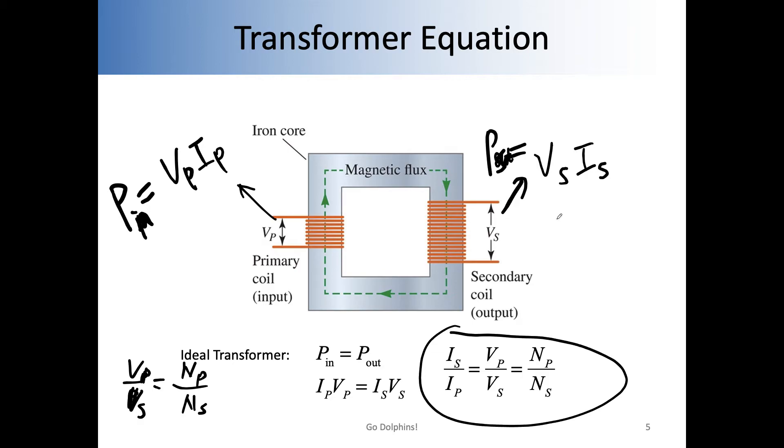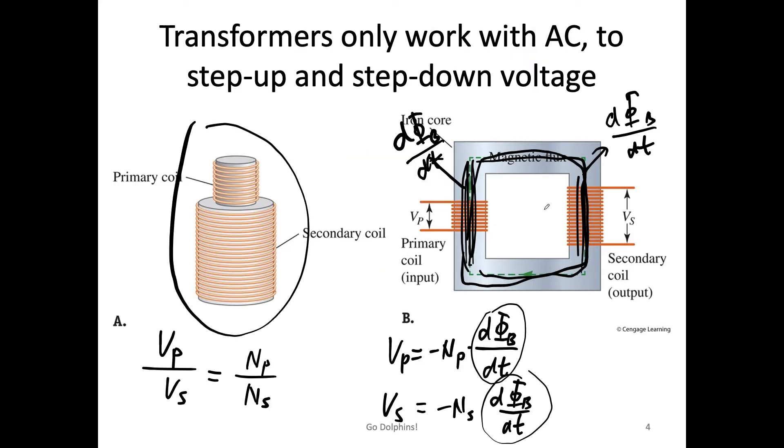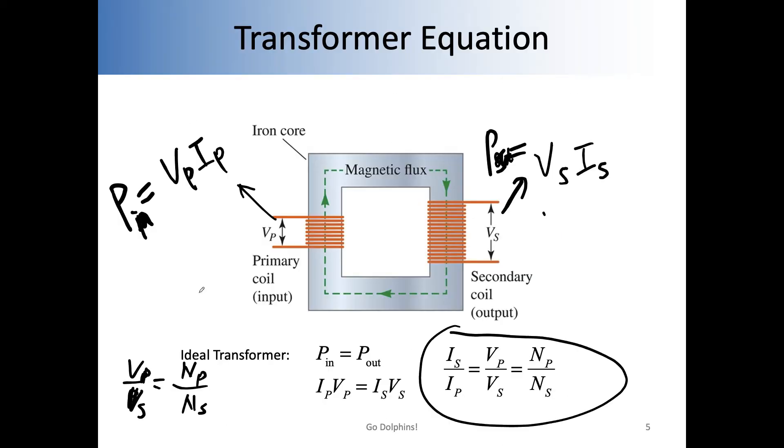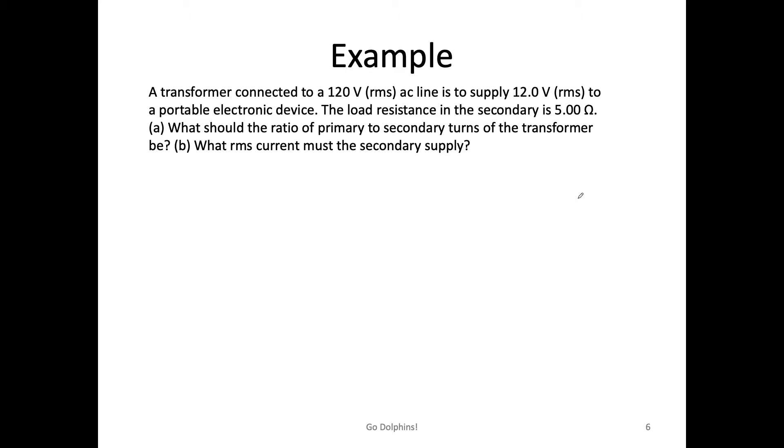So actually, you can break this down to two equations. The one we already have in this side, you can also have I_S over I_P equals N_P over N_S. You can have these two equations. Now let's do one example to understand.